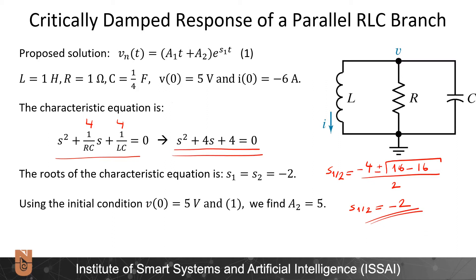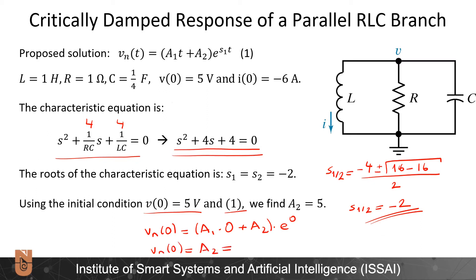Now we will find A1 and A2 using the initial condition V(0) and our proposed solution. Evaluating V_n(0): A1 times t equals zero gives zero, plus A2 times e to the zero equals A2. The initial condition gives V_n(0) equal to 5 volts, therefore A2 equals 5. That was easy.